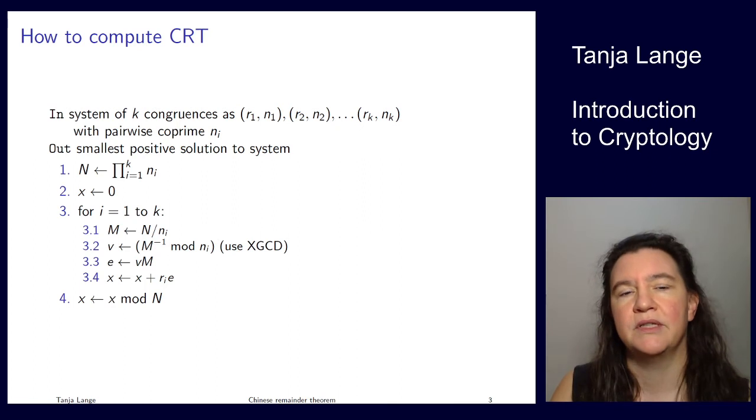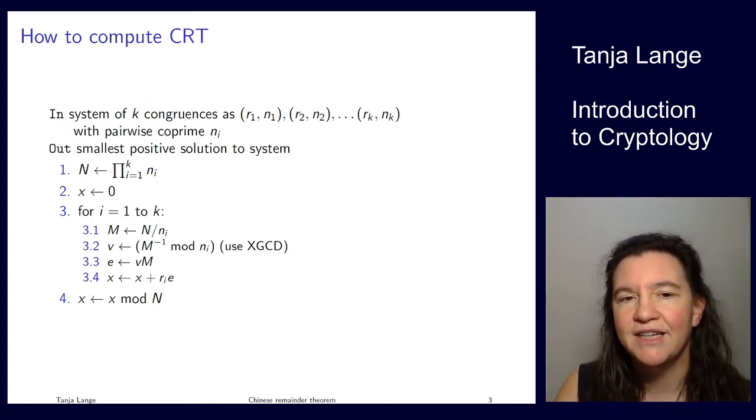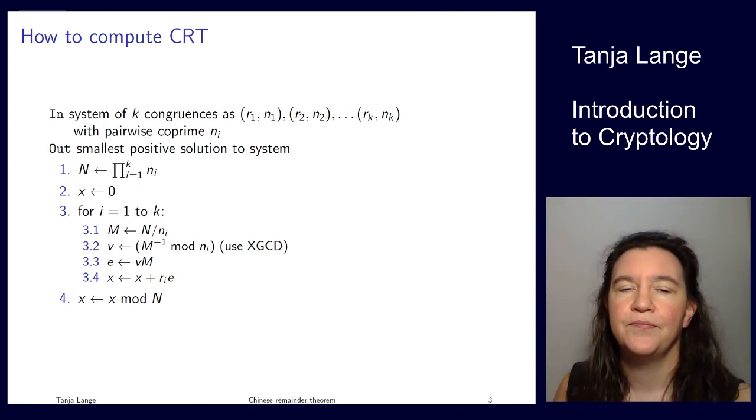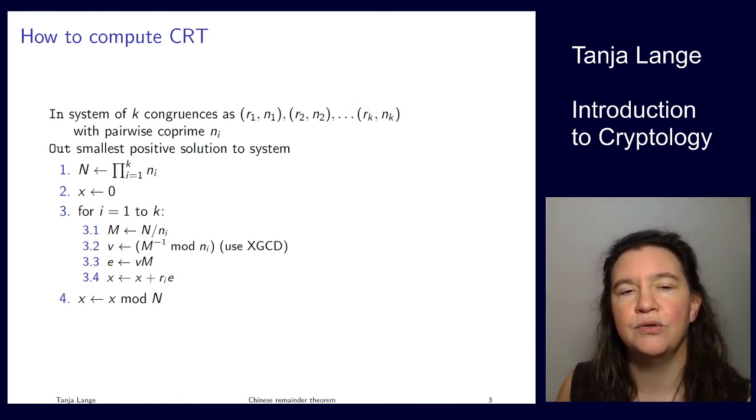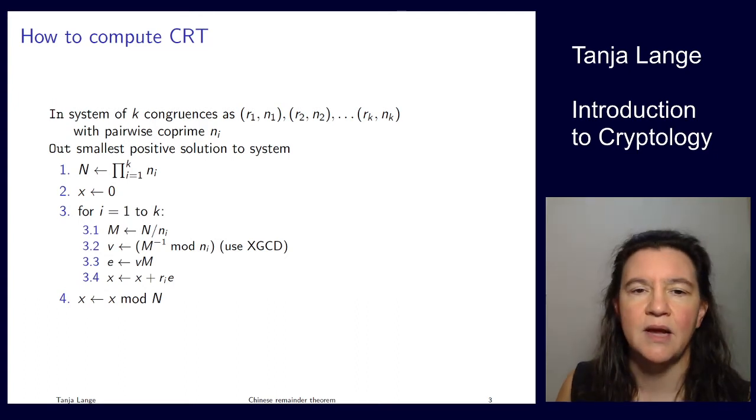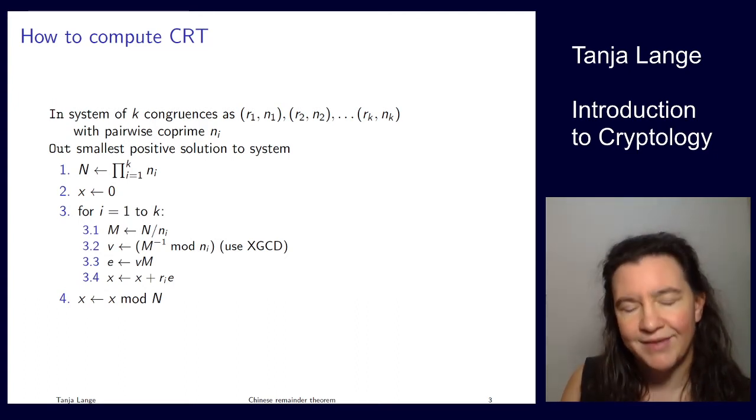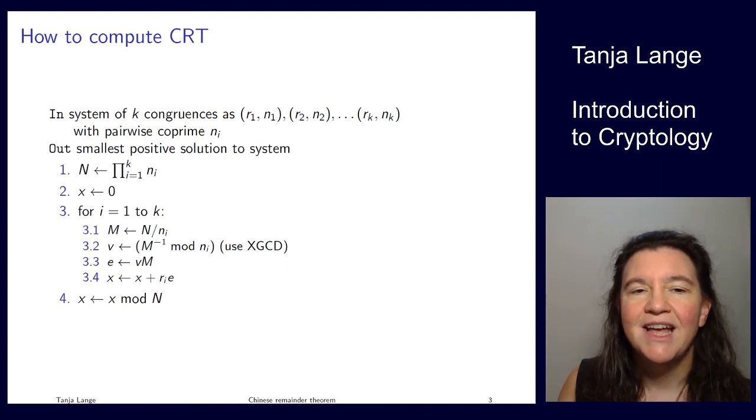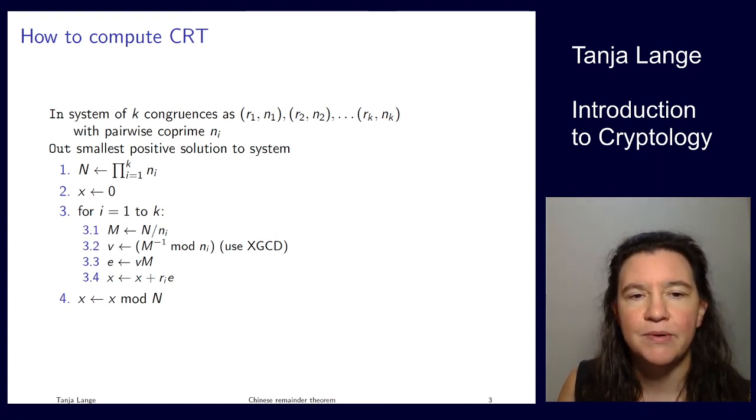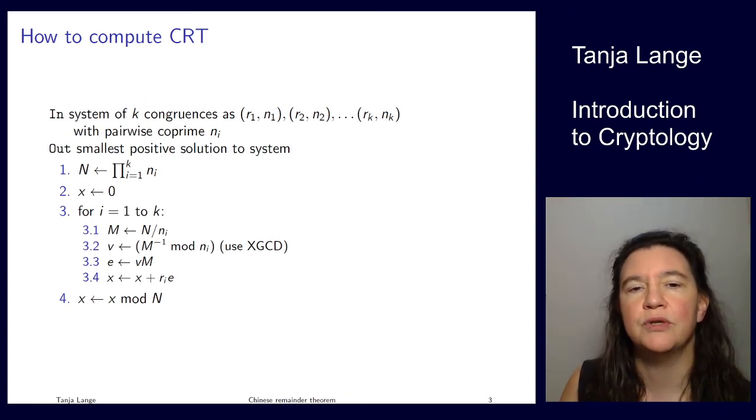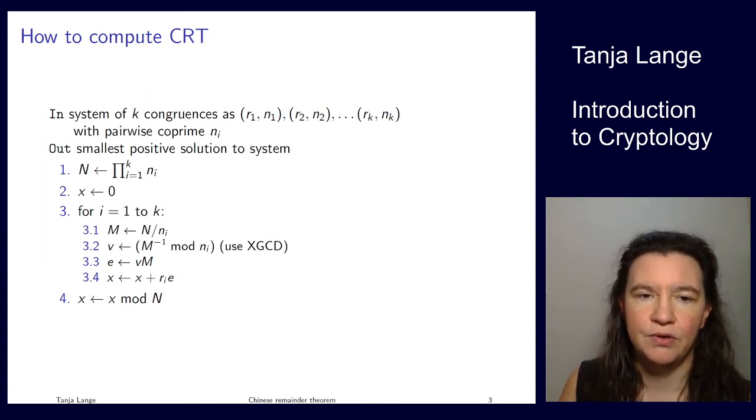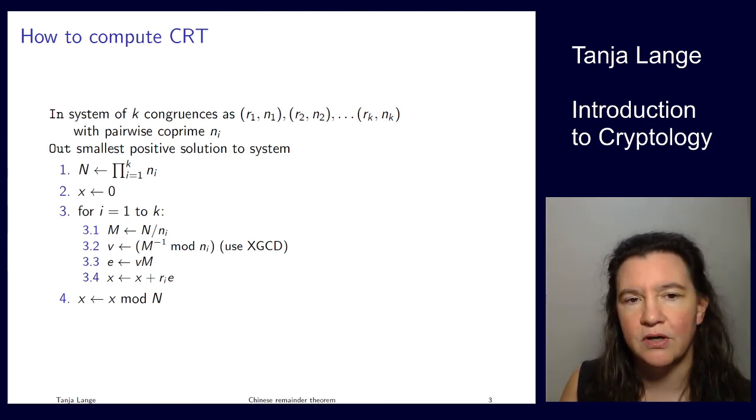This N is just the product of the moduli, so that is the number modulo which we can expect a unique solution. Then we're doing four simple steps for each of these moduli. What we're doing is computing M—N divided by little nᵢ just means it's the product of all the others. Then we need to invert this M modulo the nᵢ that we're currently looking at. That's a step where you would be using the extended Euclidean algorithm. Then it's just two multiplications: we're multiplying this inverse of M, called v, by M. This is a multiplication over the integers. If this was modulo nᵢ, this would just be one, because v is the inverse of M modulo nᵢ.